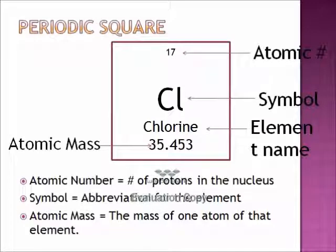The periodic square is the key to getting information about a particular element. Looking at the square, the number at the top is the atomic number, which tells us the number of protons in the nucleus. In our example, the 17 at the top means chlorine has 17 protons. As an extra tidbit: because an atom likes to be neutral, the number of electrons equals the number of protons — so if you have 17 protons, you have 17 electrons.